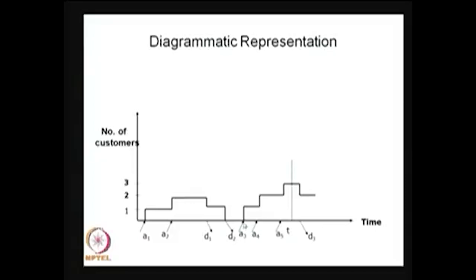The third customer enters at time point a3, so during that interval the system was empty. The system keeps increasing by one whenever a customer enters and decreasing by one whenever service is completed. This is the diagrammatic representation of any queuing system. In this simplest case, only one customer enters at a time and only one customer is served and leaves the system.